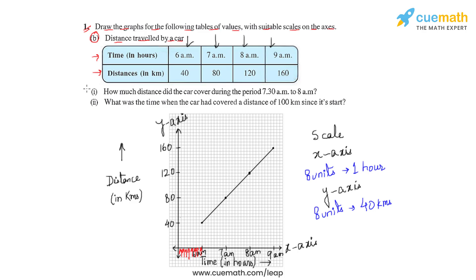Now let us answer the questions that follow. We have to find the distance the car covered during the period 7:30 am and 8 am. From this table we have seen that the car covered 120 kilometres by 8 am. So let us find out how many kilometres the car covers at 7:30 am. Since eight units corresponds to one hour, to mark half an hour we'll have to take four units from 7 am, which gives us this point on the x-axis.